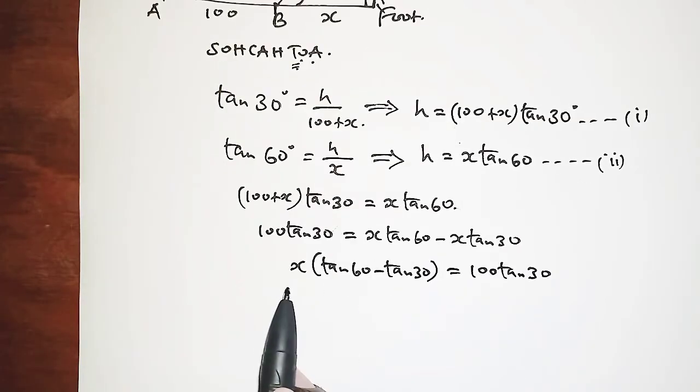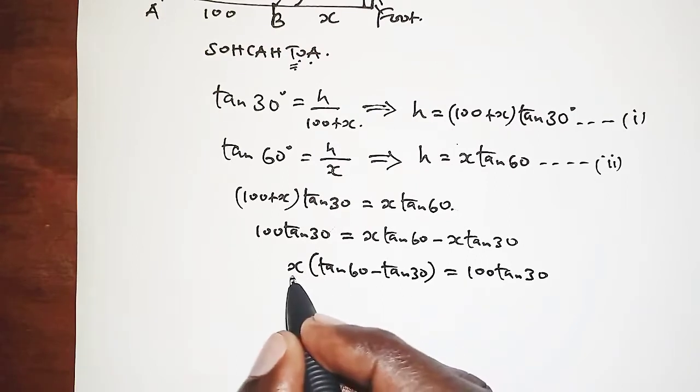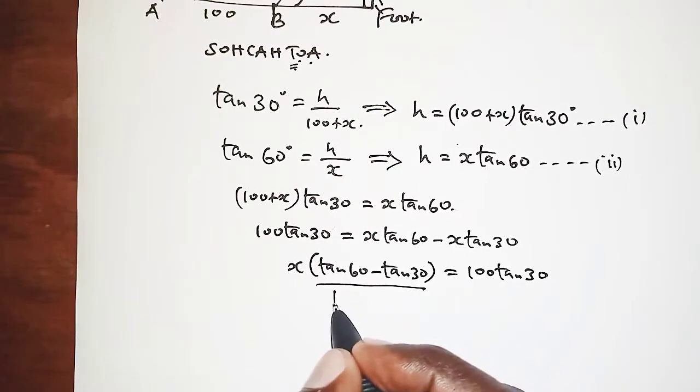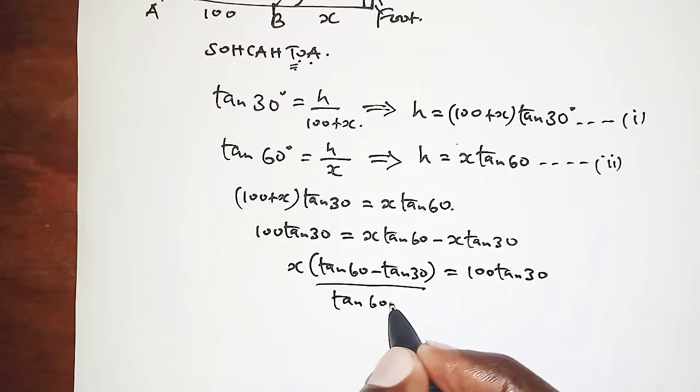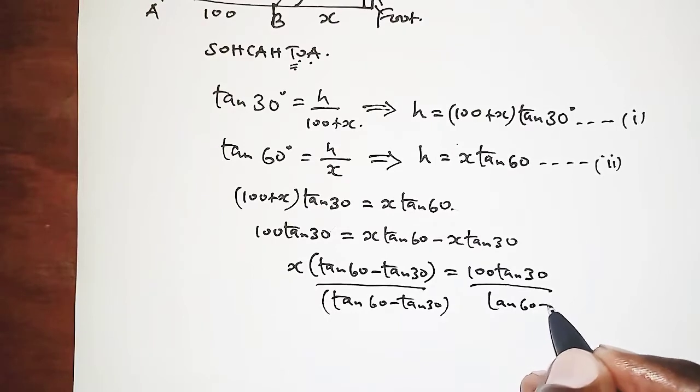So here we have, dividing both sides by (tan 60° - tan 30°), here also (tan 60° - tan 30°).